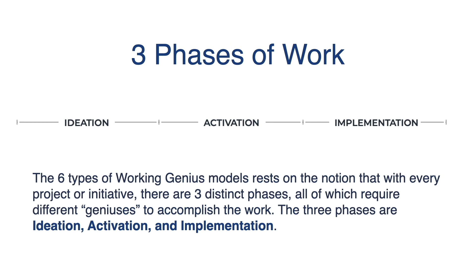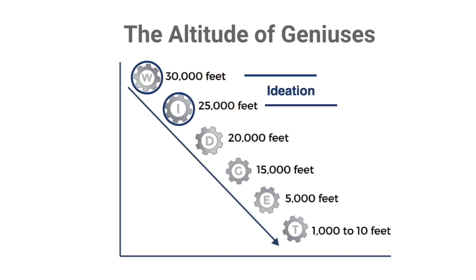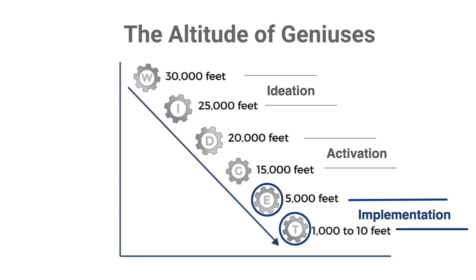There are three phases of work. The six types of Working Genius model rests on the notion that with every project or initiative, there are three distinct phases, all of which require different geniuses: ideation, activation, and implementation. This is the altitude of geniuses, starting at the 30,000-foot level down to the ground. In the ideation phase, wonder and invention have the most input or value. In the activation phase, discernment and galvanizing have the most value. And in the implementation phase — at 5,000 feet and on the ground respectively — enablement and tenacity have the most input and value.